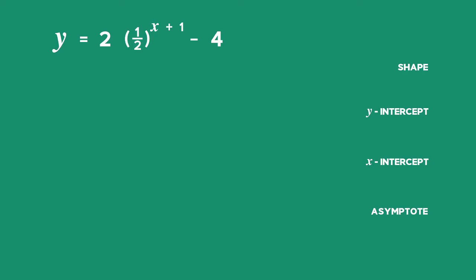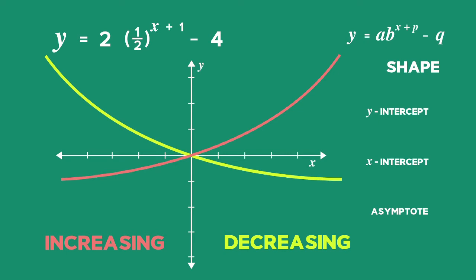Let's start by identifying the shape. Is the graph increasing or decreasing? Remember, an exponential graph is decreasing when the base b is less than 1 but greater than 0, and increasing when b is greater than 1.